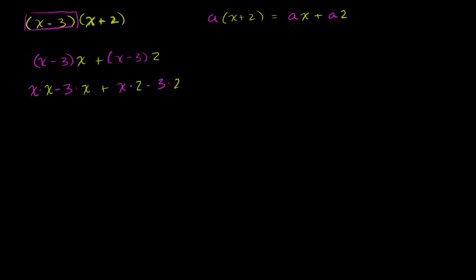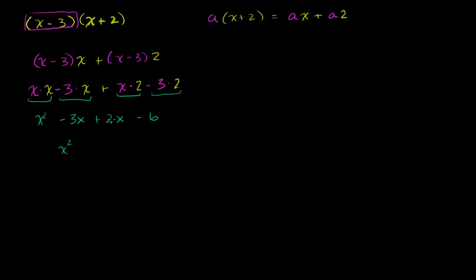So what's this going to equal? x times x is x squared. Then minus 3 times x gives minus 3x. Then x times 2 gives plus 2x. And then negative 3 times 2 is minus 6. So combining: minus 3x plus 2x is minus x, giving us x squared minus x minus 6.